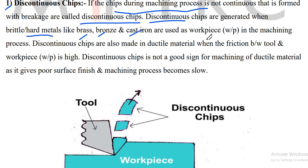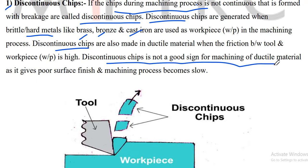Discontinuous chips are generated when brittle, hard materials like brass, bronze, and cast iron are used as a workpiece in the machining process. Discontinuous chips are also produced in ductile material when the friction between tool and workpiece is high. This is not a good sign for machining of ductile material — it gives poor surface finish and the machining process becomes slow.